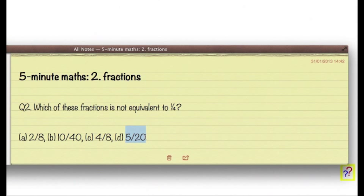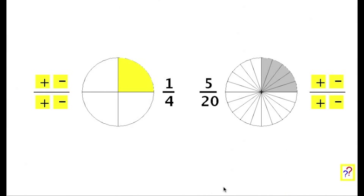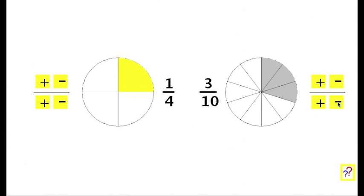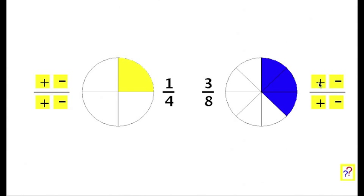But the odd one out is four eighths, because four is not a quarter of eight. And if I create a picture of four eighths, I need one more. You can see that four eighths is equivalent to a half, actually twice the size of the other fractions.